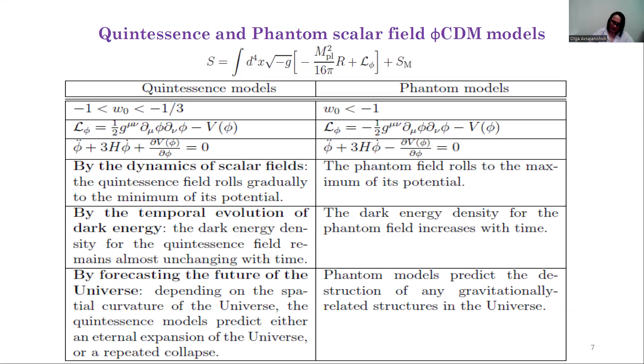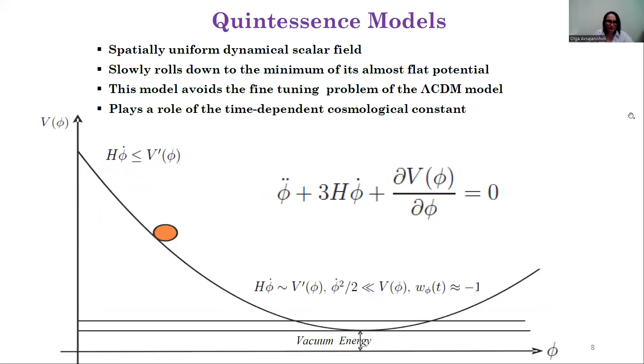By the dynamics of scalar fields: the phantom field rolls to the maximum of its potential, while for quintessence field, depending on the ratio of the friction term and the φ-derivative of the potential, the scalar field Klein-Gordon equation of motion describes the regimes of quick rolling down and slow rolling down to the minimum of its potential.